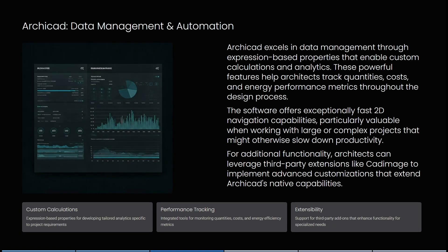The last thing we're going to look at is how they do data management and automation. Archicad excels in data management through expression-based properties that enable custom calculations and analytics. These powerful features help architects track quantities, costs, and energy performance metrics throughout the design process. The software also offers fast 2D navigation, particularly valuable when working with large or complex projects. For additional functionality, architects can leverage third-party extensions like Cadimage to implement advanced customizations that extend Archicad's native capabilities.